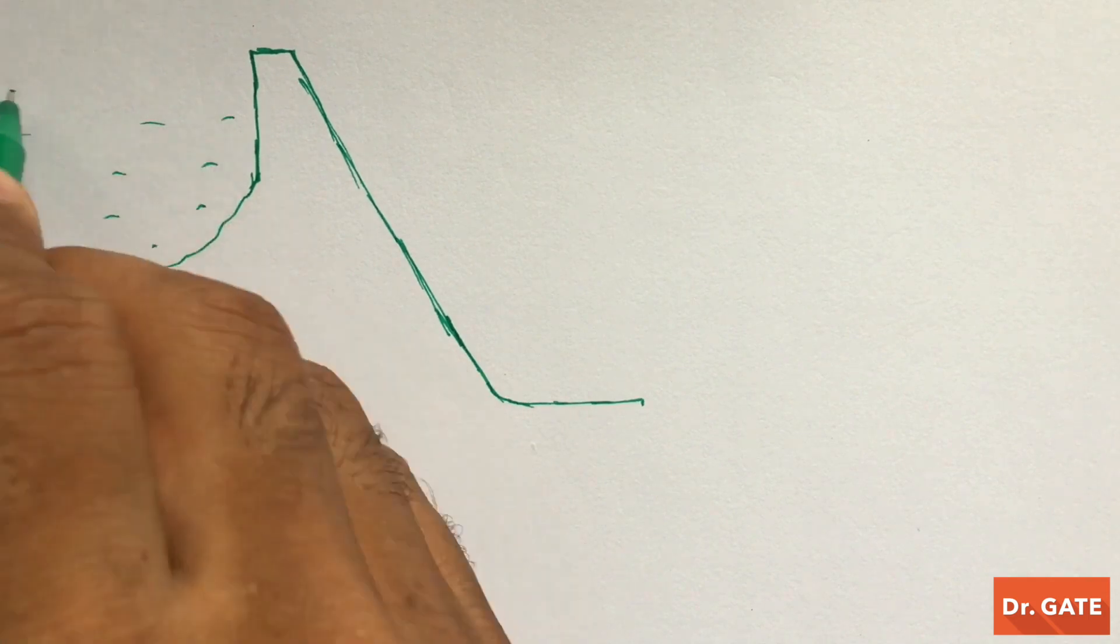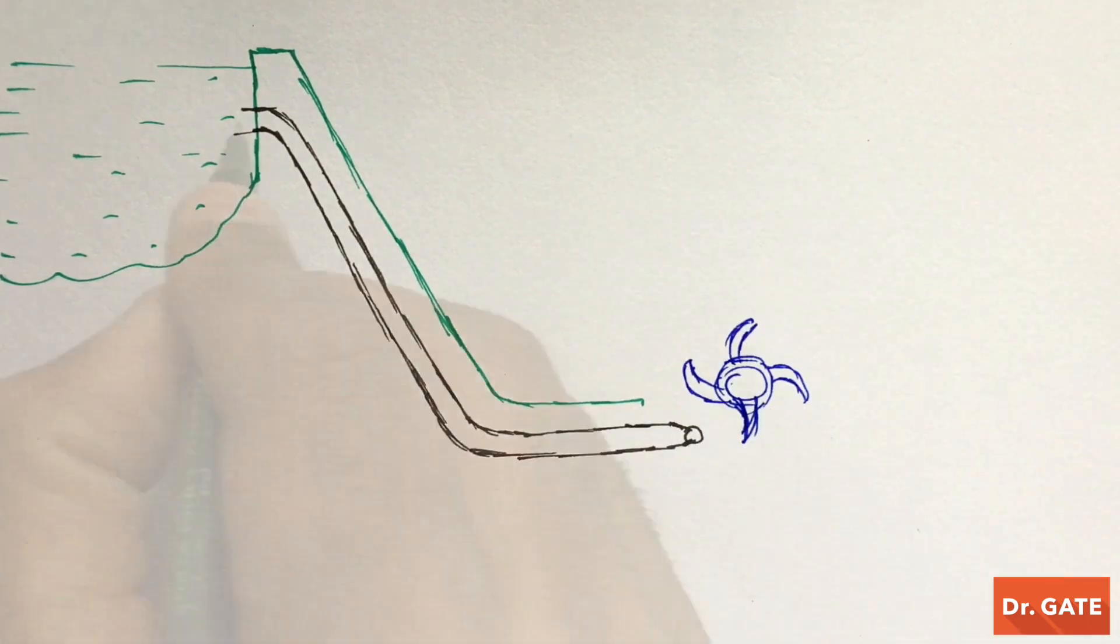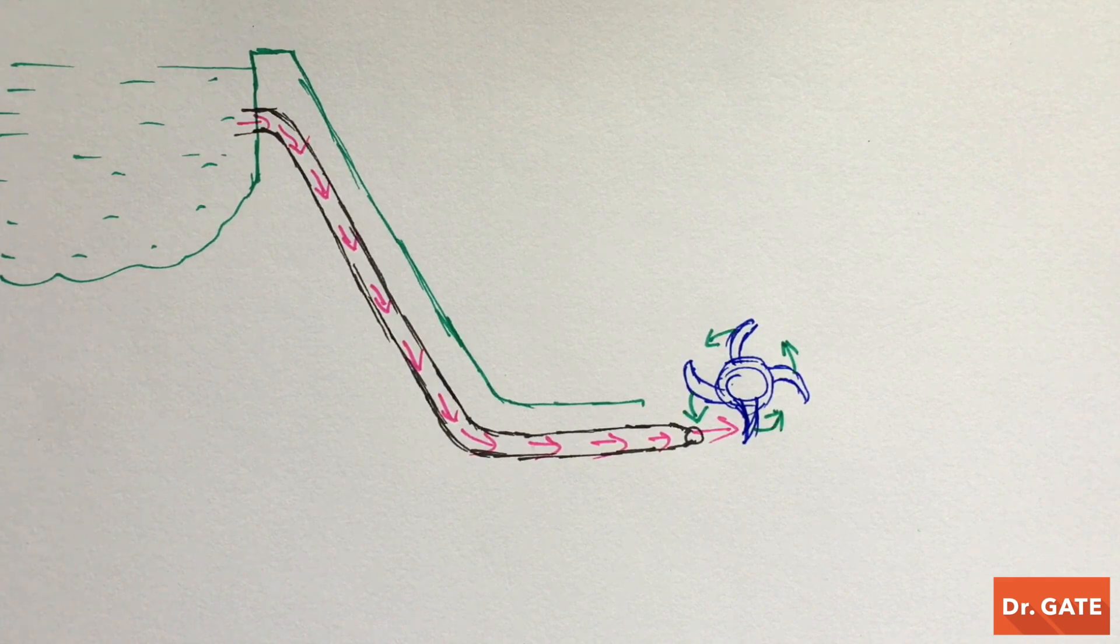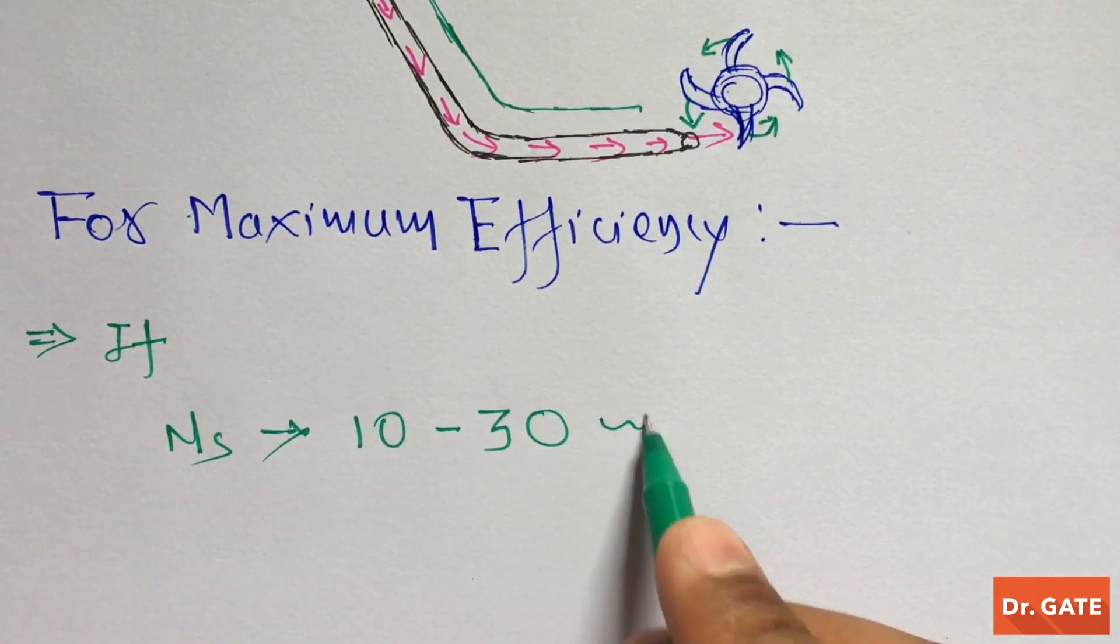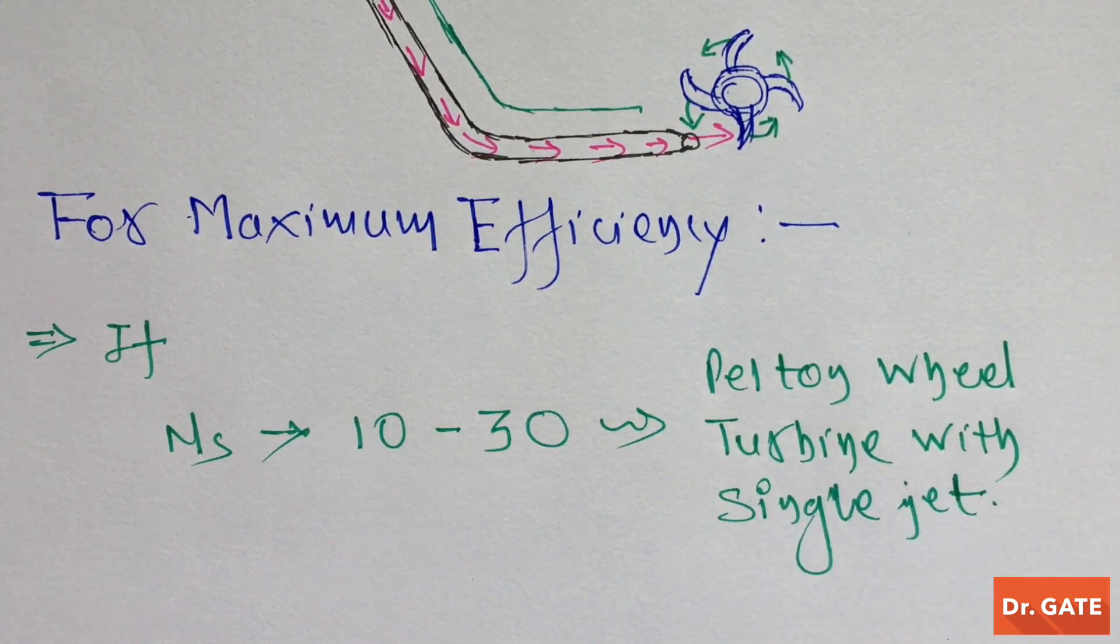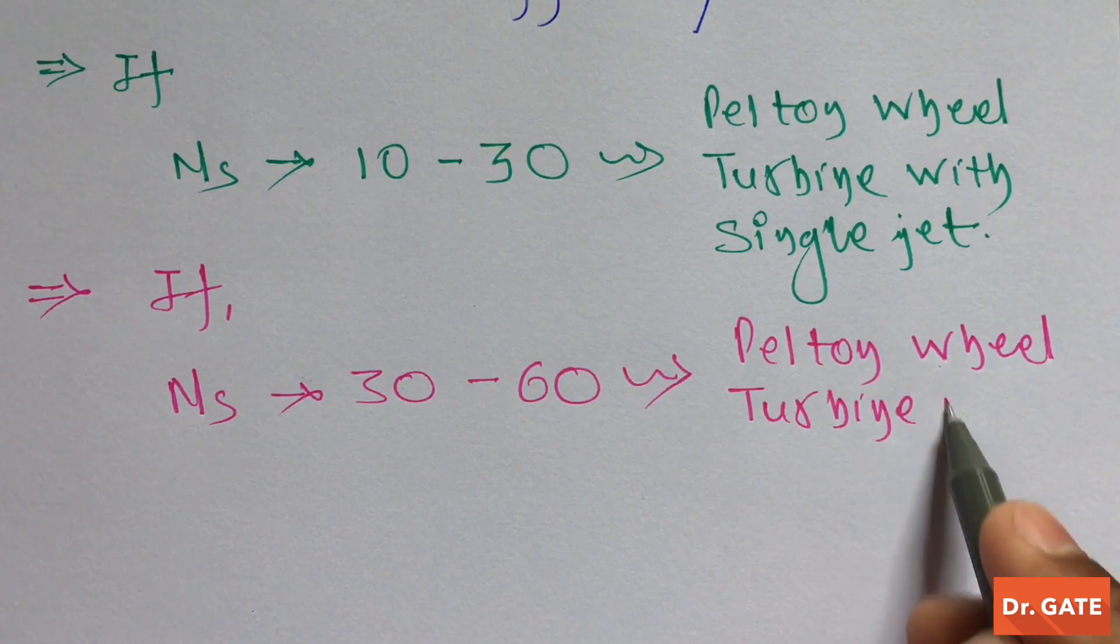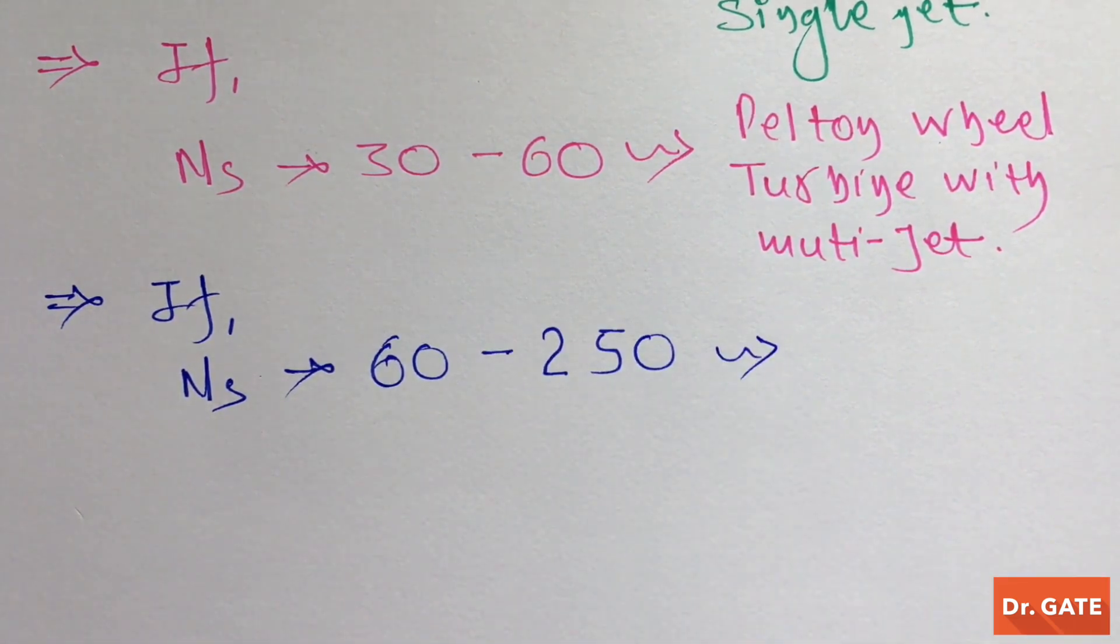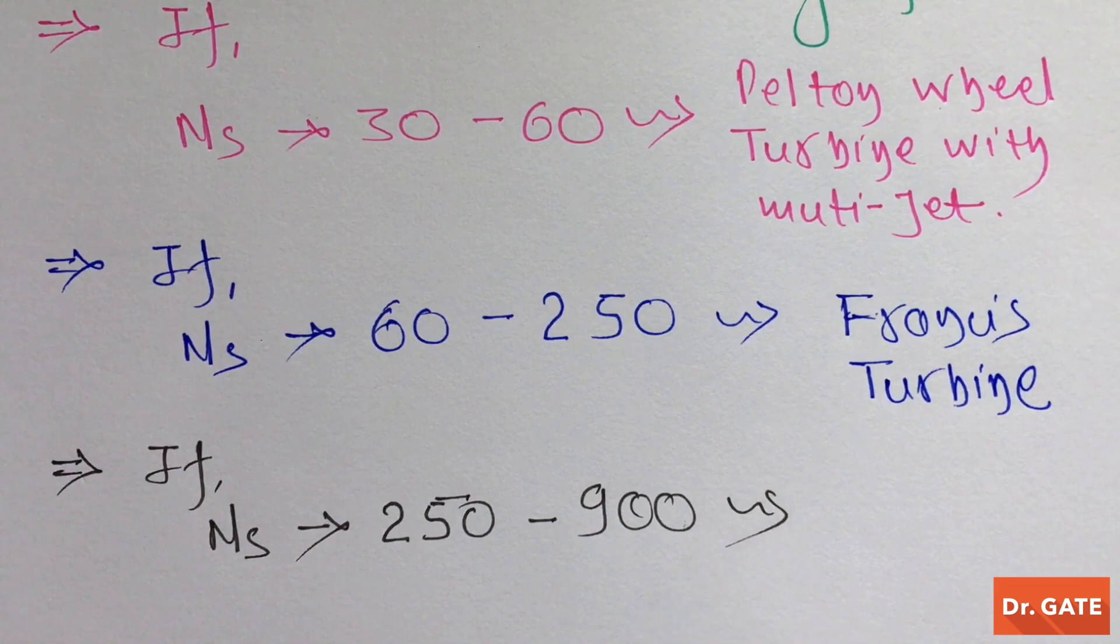Now come to our initial concern. If we want to install the most efficient turbine over here, then first we will find: What is the net head available, what would be the rotational speed of the shaft, and how much output power is required. Then we will find the value of specific speed. And for maximum efficiency, if specific speed comes out 10 to 30, we will install Pelton wheel turbine with single jet. If specific speed comes out 30 to 60, we will install Pelton wheel turbine with multi jet. If specific speed comes out 60 to 250, we will install Francis turbine. And if specific speed comes out 250 to 900, we will install Kaplan turbine.